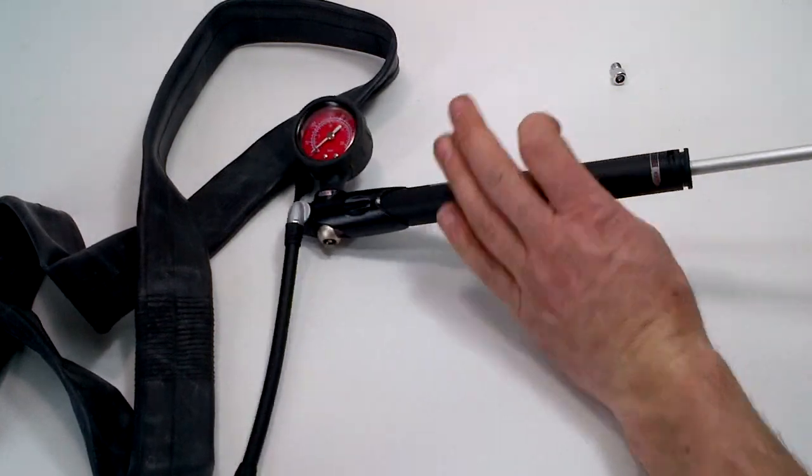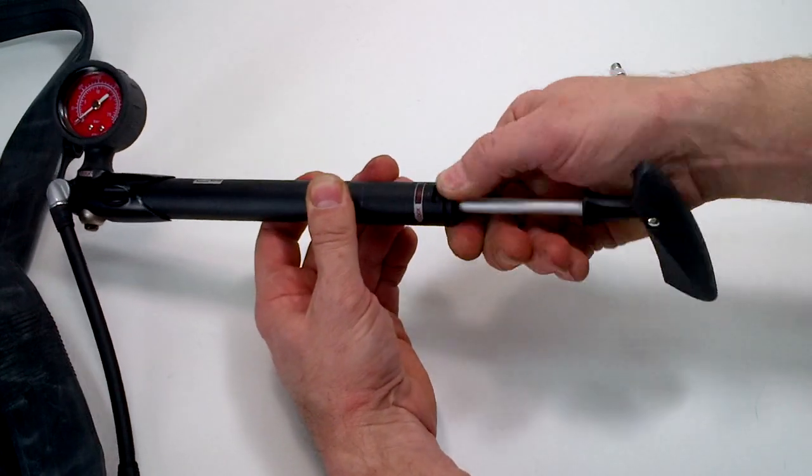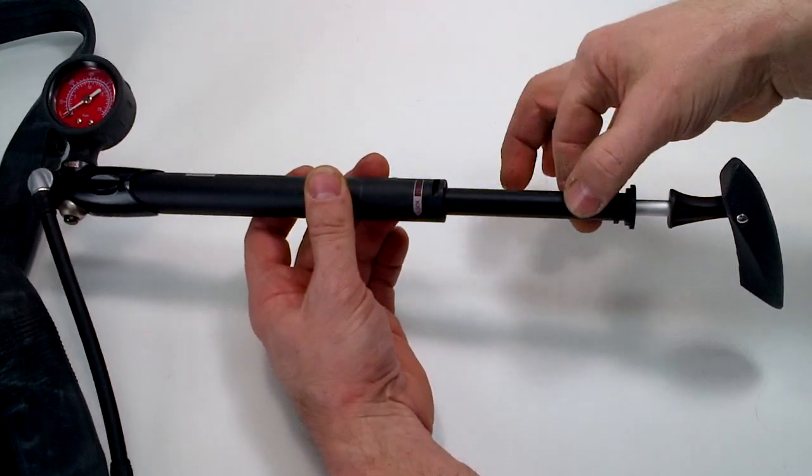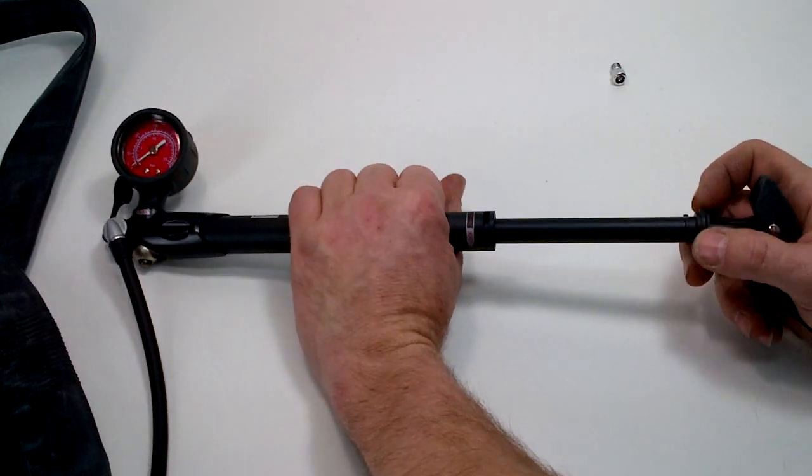This is on the pump. This is the high pressure, low volume. Then you unlock it and this bigger cylinder is how to do the higher volume but low pressure.